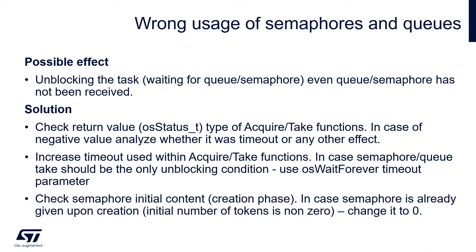In case the semaphore was not received, perform a different action or increase the timeout. Another scenario is a non-zero initial number of tokens during semaphore creation. Within the osSemaphoreNew function there are three arguments: the first is the maximum number of tokens (for binary semaphores it is 1), the second is the initial number of tokens — if this is non-zero, the semaphore will be available immediately after creation. The third argument is the address of the semaphore attributes structure. If we don't want the semaphore available right after creation, keep this value at zero, and if code generators set it to one, change it manually.